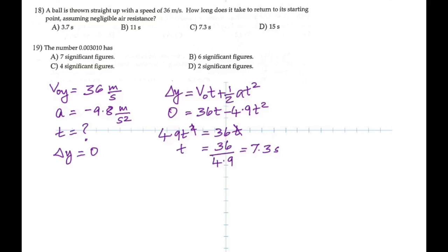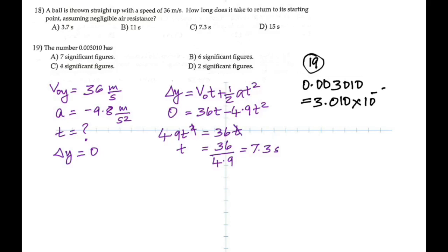Question 19: find the number of significant figures in 0.003010. Put the number in scientific notation: 3.010 × 10⁻³, which means there are four significant figures. That's the easiest way to count significant figures.